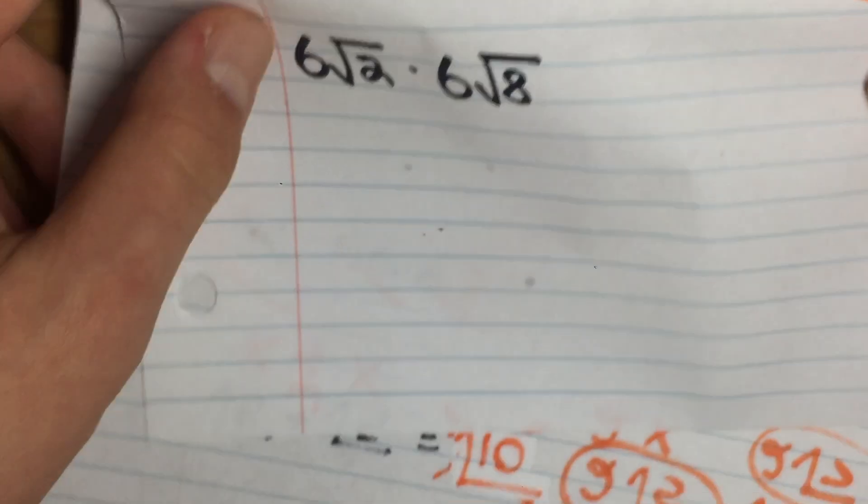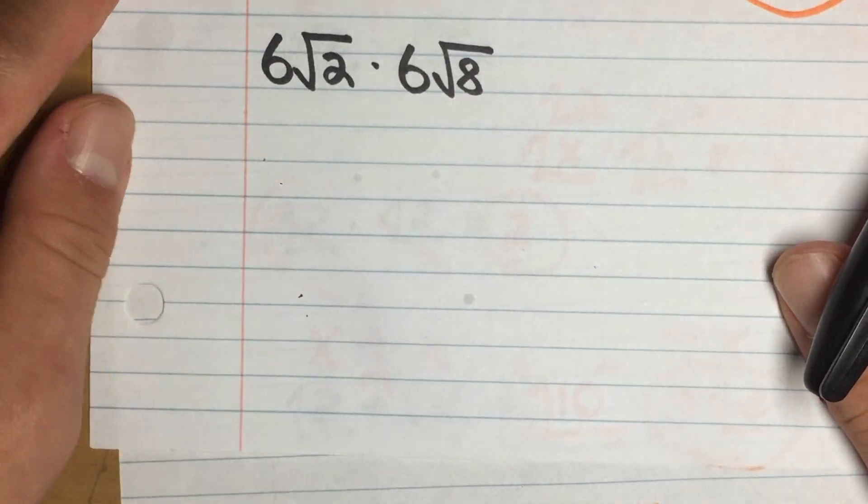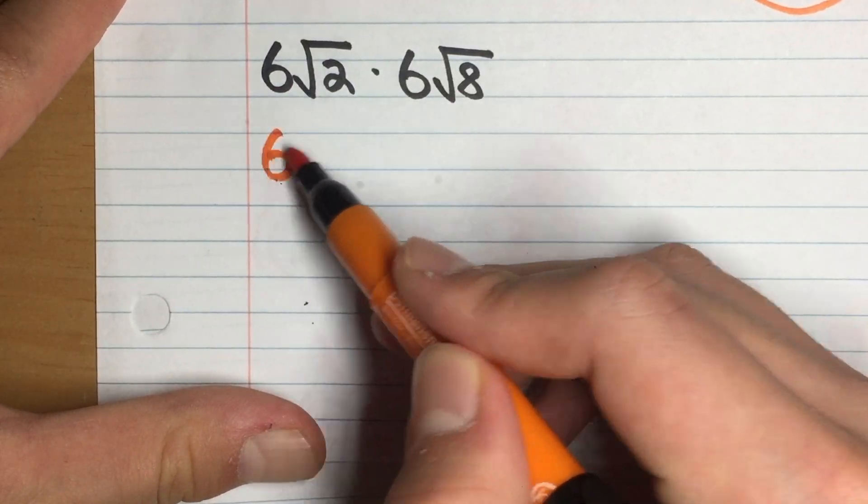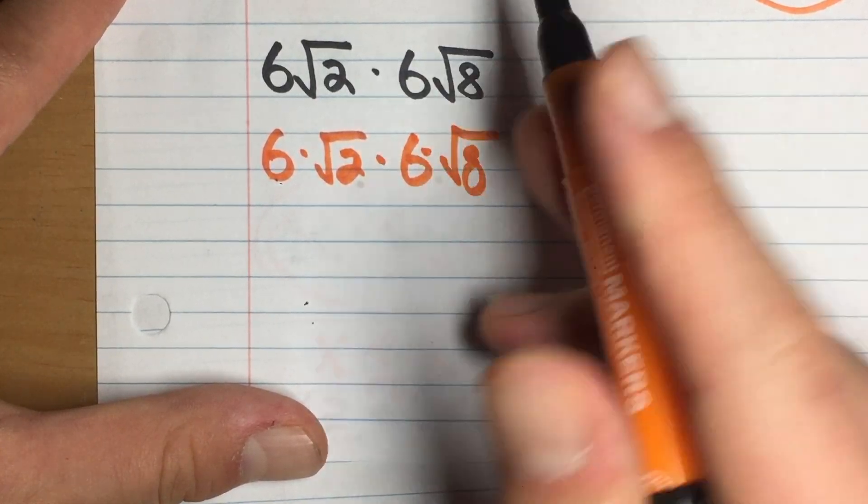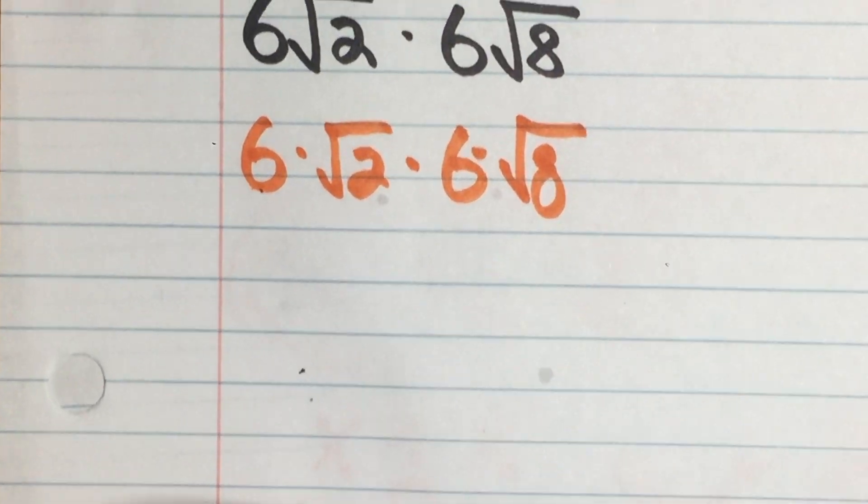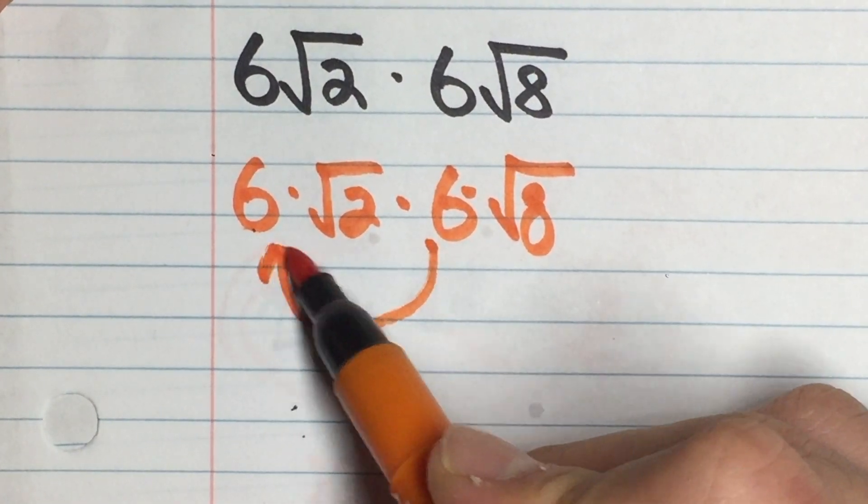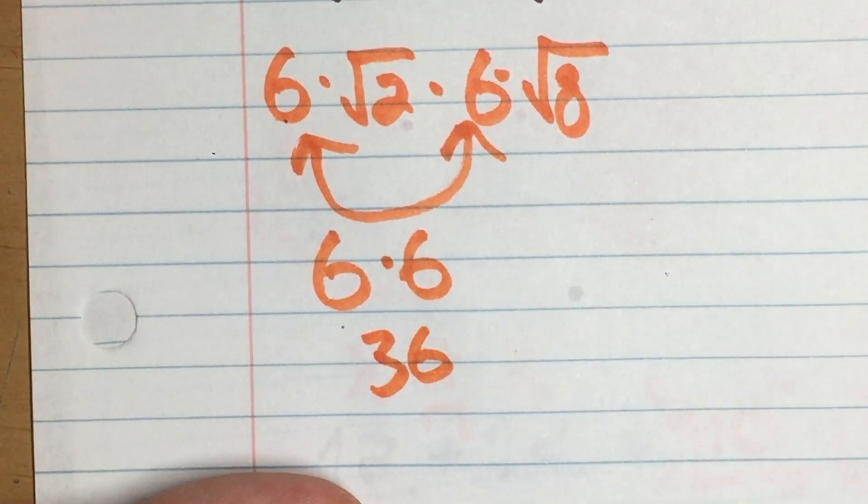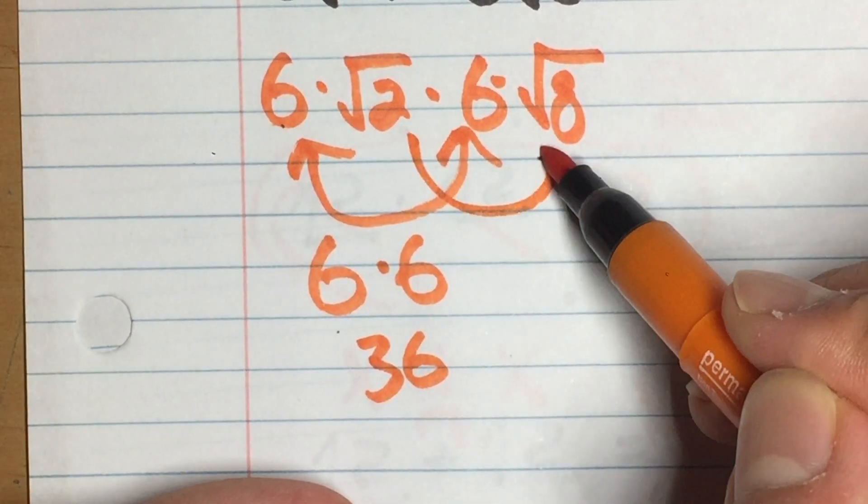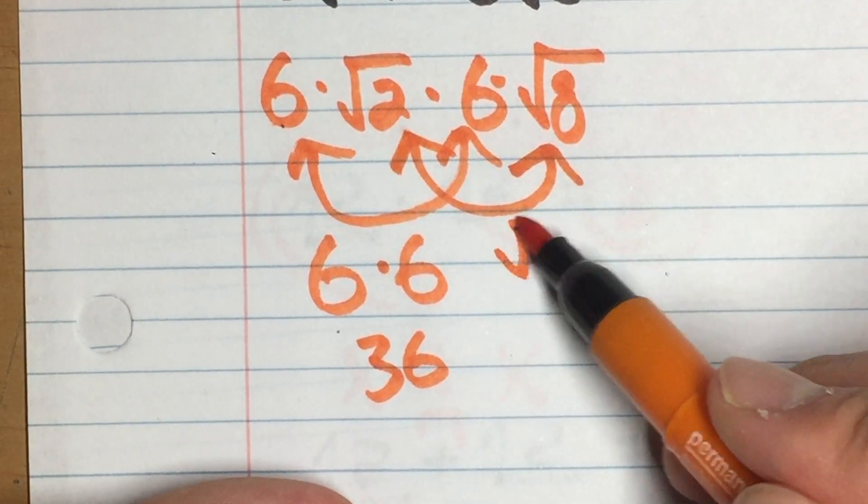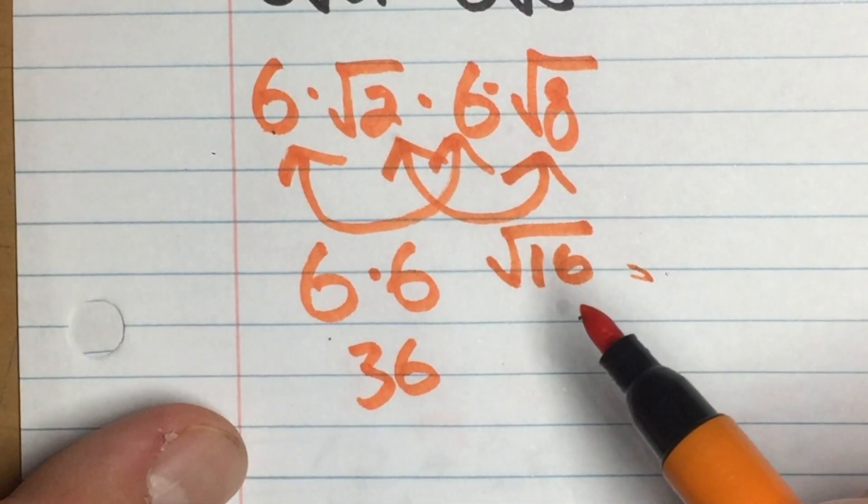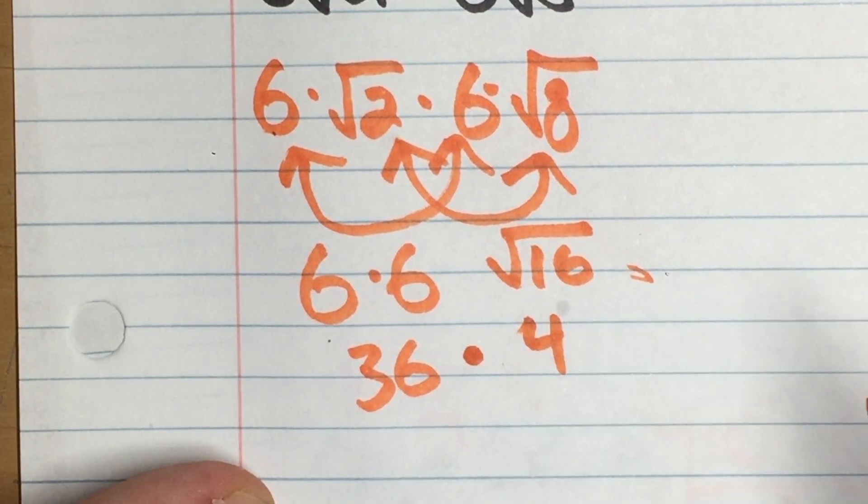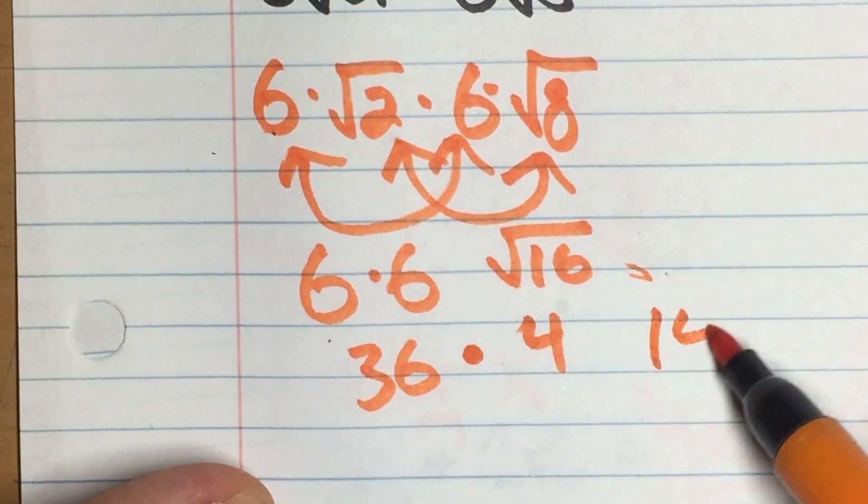And let's keep going. We have one more. So 6 root 2 times 6 root 8. Okay, so same thing as before, we just do multiplication. So 6 times root 2 times 6 times root 8. So this is all multiplication so far. Now what we do is we break it up, right? So we have our numbers, 6 and 6. And when we multiply, we get 6 times 6. And that gives us 36. Now we have root 2 times root 8. So root 2 times root 8, that gives us root 16. And what's the root of 16? That is 4, because 4 times 4 gives us 16. And now all we have to do is multiply 36 and 4 together. And when we do that, we get 144. And that's our answer.